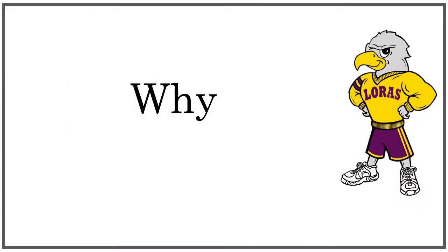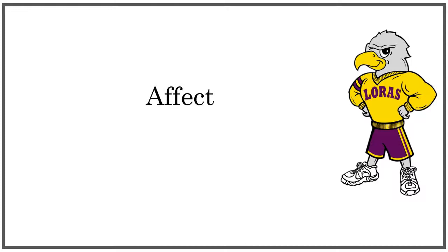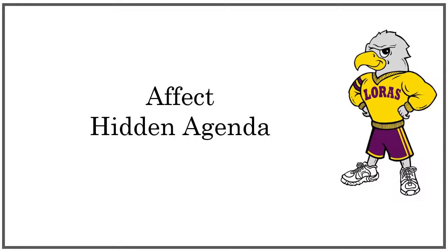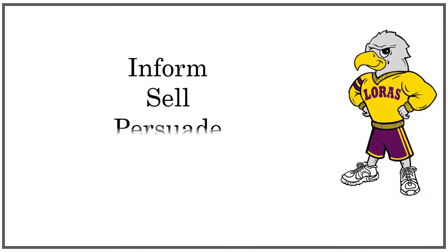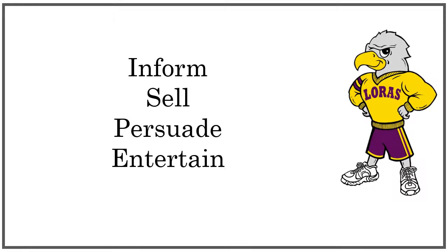When we ask why an article was published, we are trying to look at the motivations of the author for creating the work. What we want to know is how was this article supposed to affect the reader? Does the author have a hidden agenda? We want to know if the article was written to inform, sell, persuade, or entertain the audience. Each of these motivations affects how the author is going to present the information and what actions they are hoping the reader will take after reading. Think about how you would change your writing for each of these motivations.